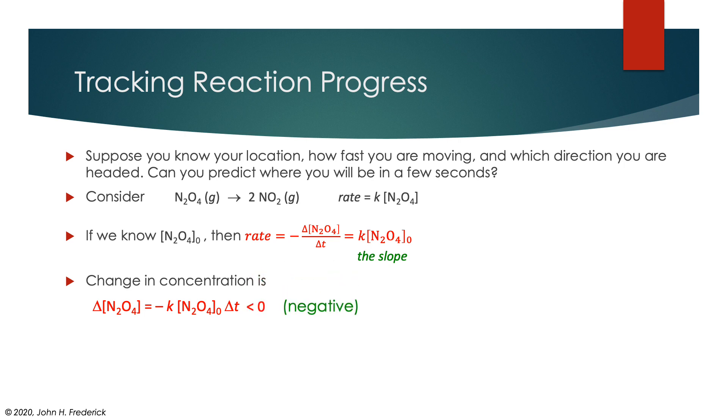I want you to notice in particular that this is less than zero. This is by design because this is a reactant, it's disappearing. So this slope needs to be negative in order to reflect the fact that the reactants are going away.